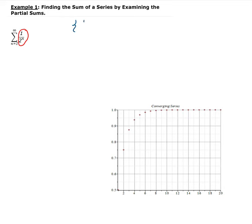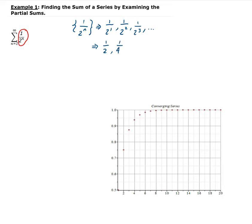For one over two to the n, let's write out the first three terms of this sequence. When n is one, we get one over two to the power of one. For n equals two, you get one over two squared. When n is three, you get one over two cubed, and so on. Simplifying these, we get one half, one fourth, one eighth, and so on.